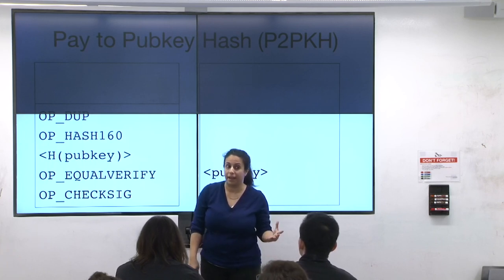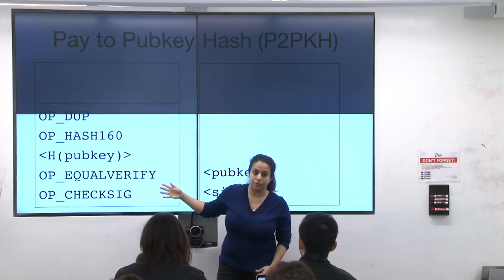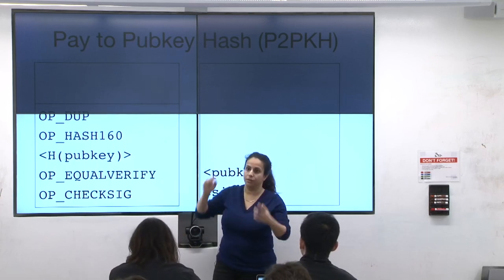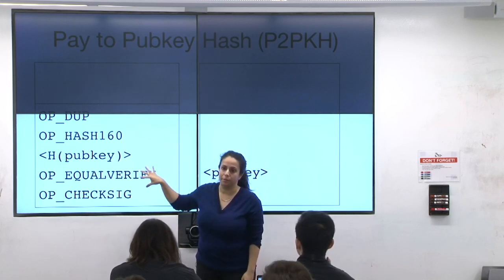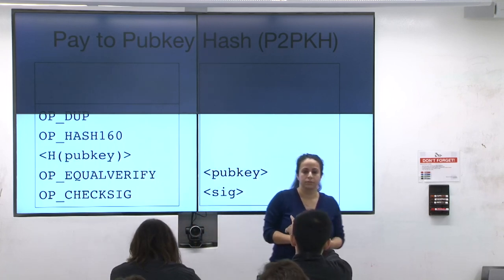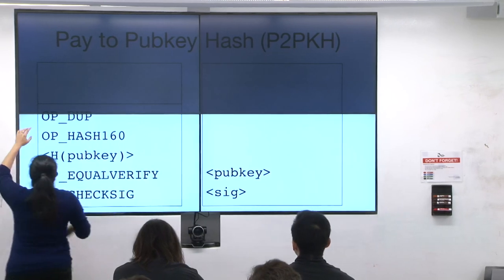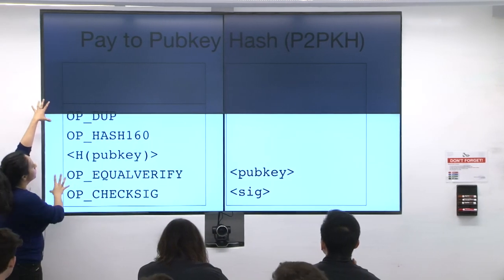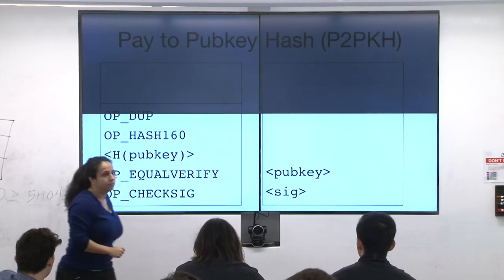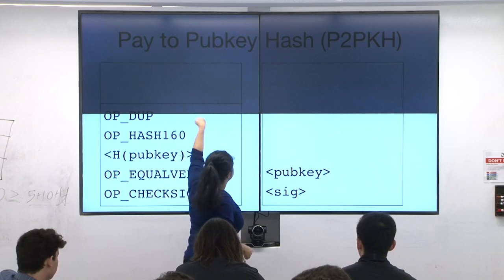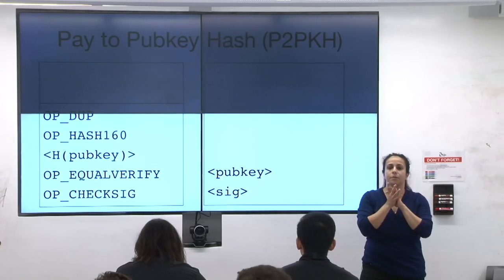Pay-to-script-hash (P2SH): instead of this particular scriptPubKey, you have a scriptPubKey that includes a hash of a script. The scriptSig has to produce that script, it has to match that hash, and the whole thing has to verify. The cool thing is you don't even know what you have to do to redeem the output — someone has to produce a script with the same hash that evaluates to true. The scriptSig and scriptPubKey get concatenated and evaluated as one thing.